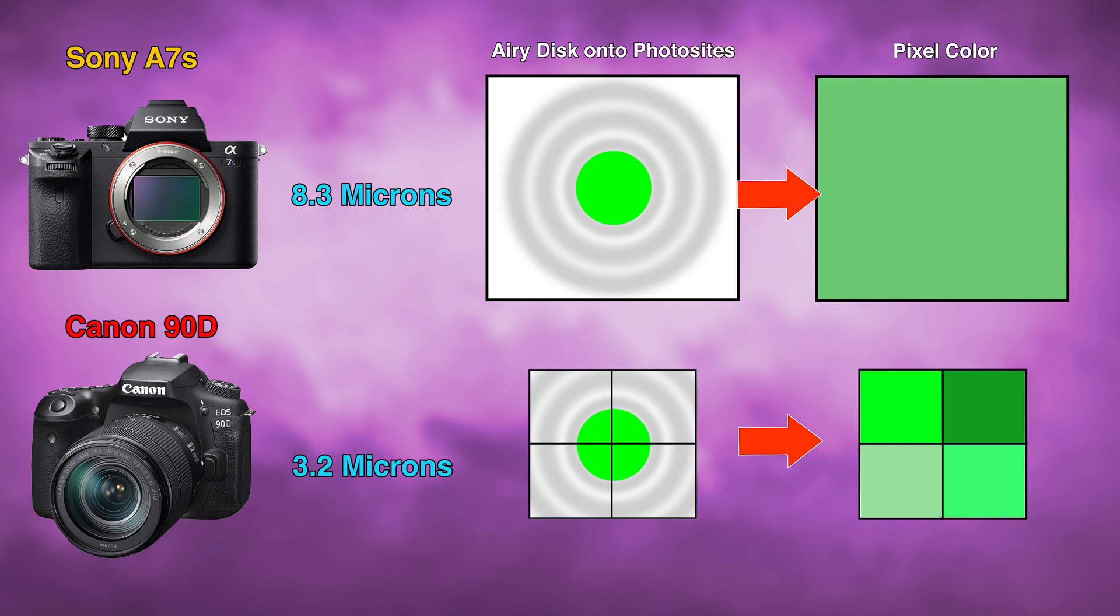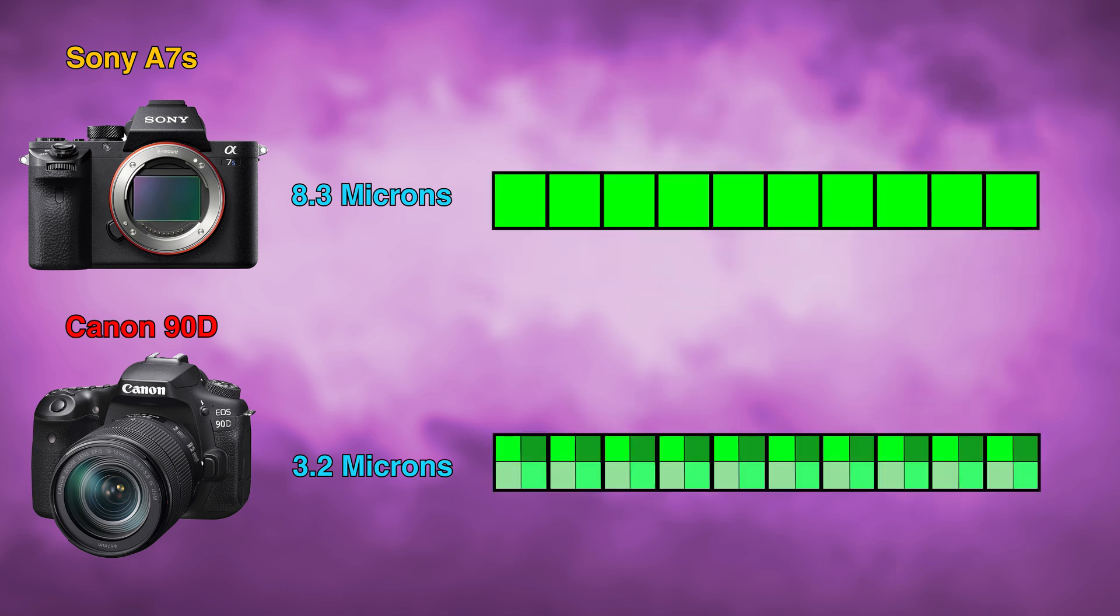The airy disk becomes fragmented and therefore it's not exactly clear where those edges begin and end. If you were to take resulting pixels from those sensors in those examples and you were to string them together in a line, you would have a nice clean edge on the A7S, but on the 90D, because of the varying shades of green, that edge would be a little bit less defined. And when we're talking about millions of pixels assembled together in a final image, the result is image softness.